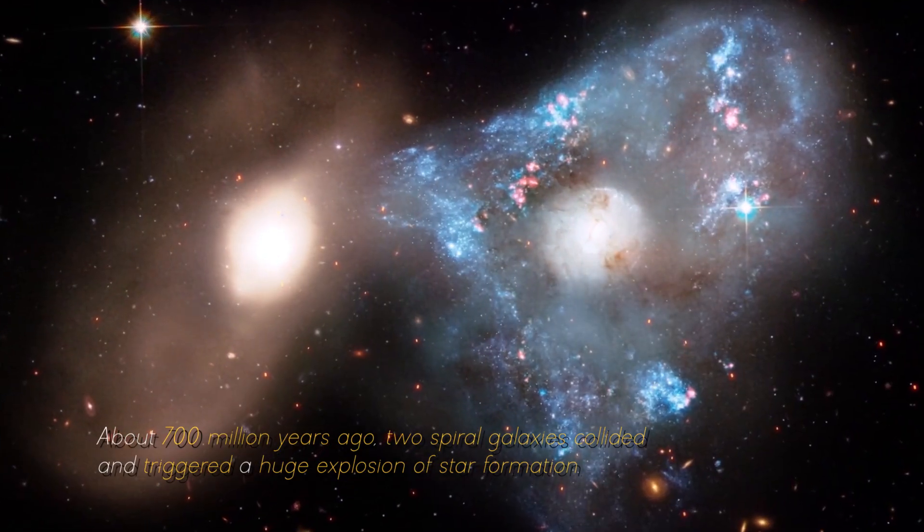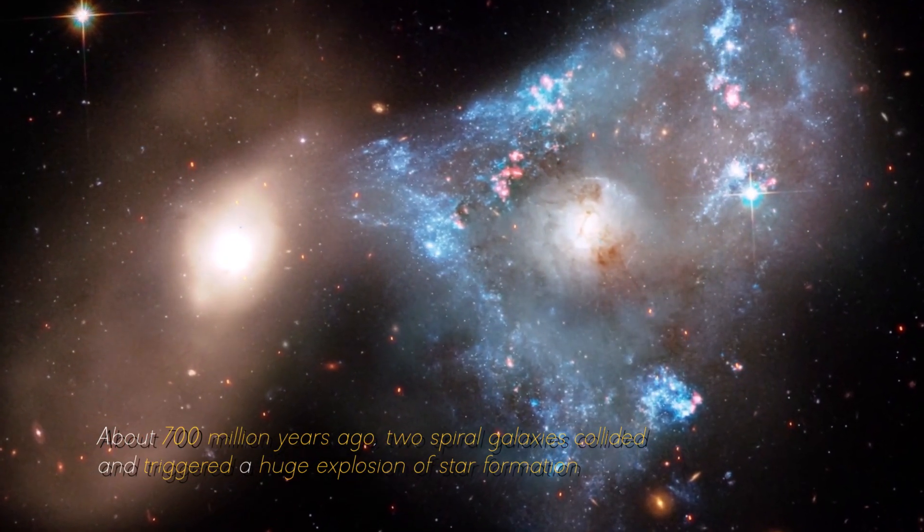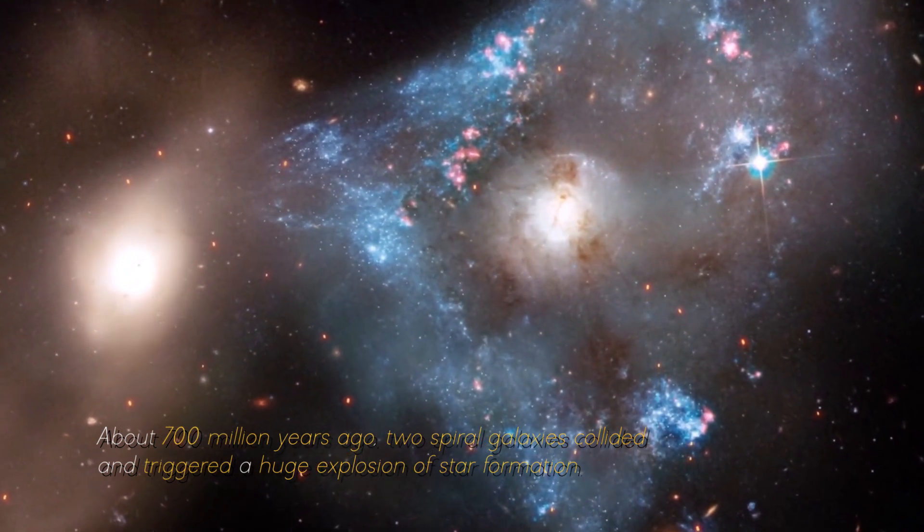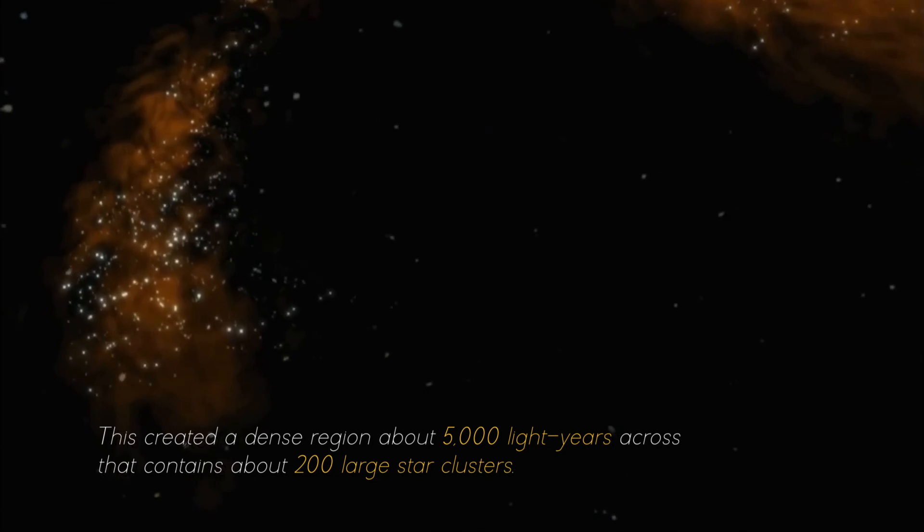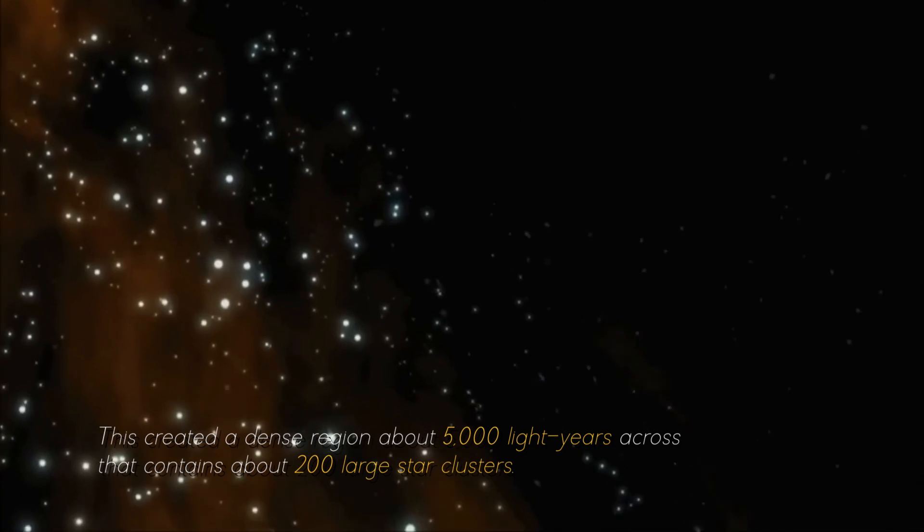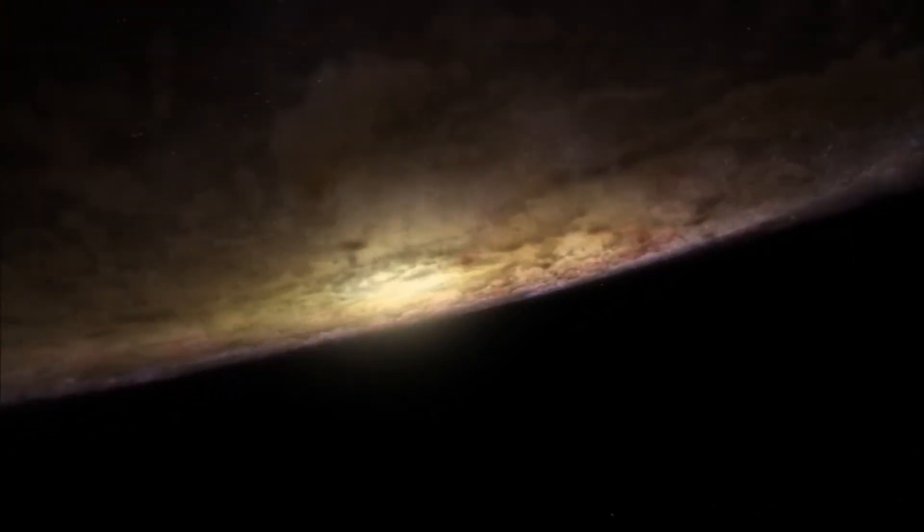About 700 million years ago, two spiral galaxies collided and triggered a huge explosion of star formation. This created a dense region about 5,000 light years across that contains about 200 large star clusters. Surprisingly, this small area contains as much gas as the entire Milky Way.